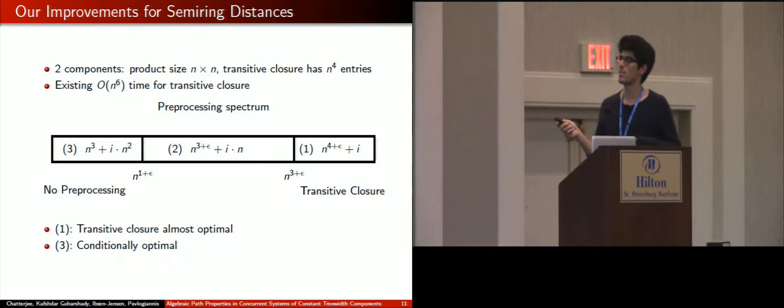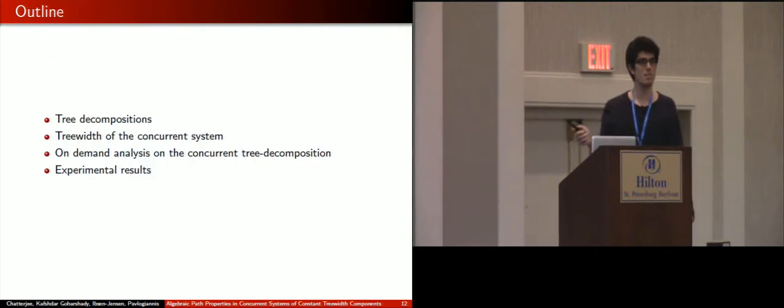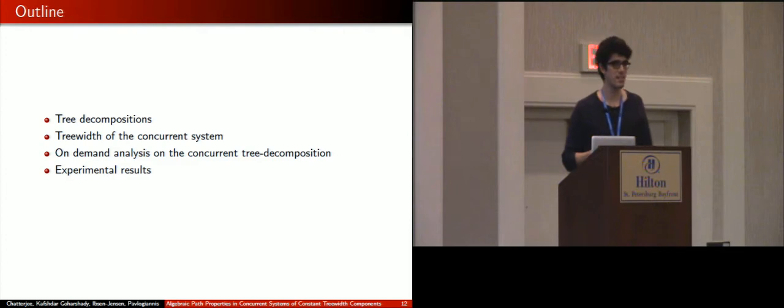So this is a flavor of our results. You can look in the paper for more, and also what happens in the case of more than two components. I will now move on and give you a high-level overview of the steps that we follow in order to obtain these complexities. So I will talk about tree decompositions and what happens in the case of the concurrent system, how tree decompositions can be used for on-demand analysis, and conclude with some experimental results.